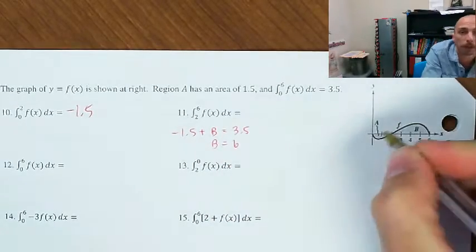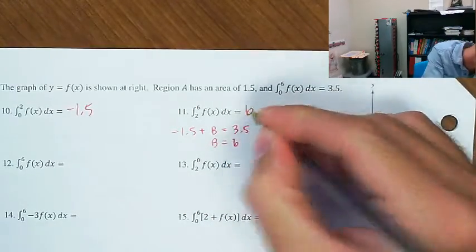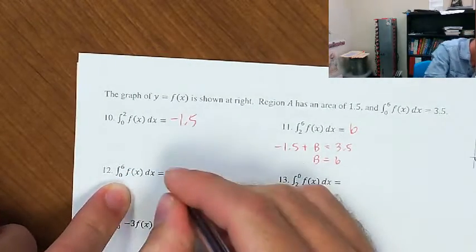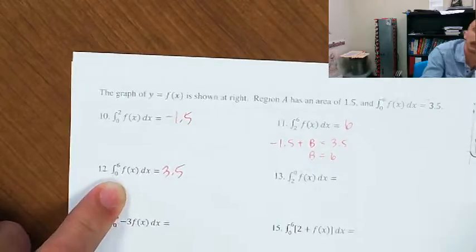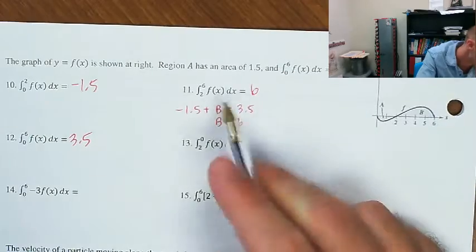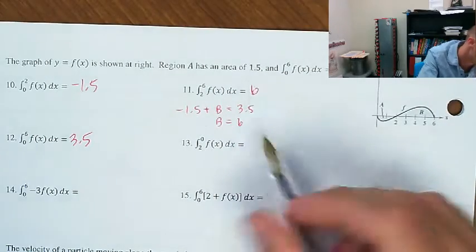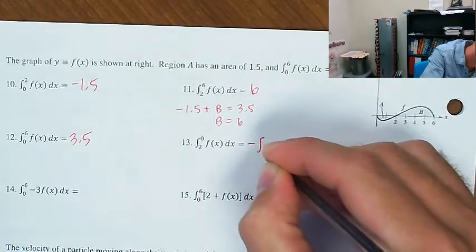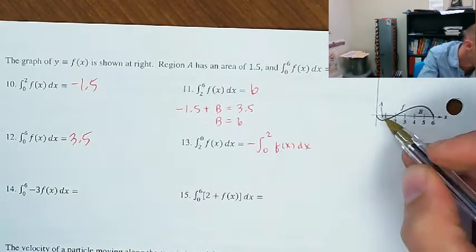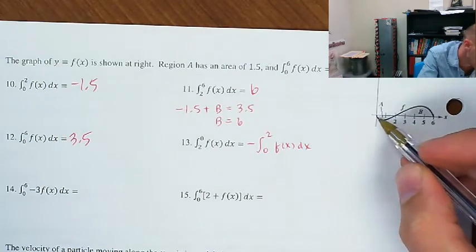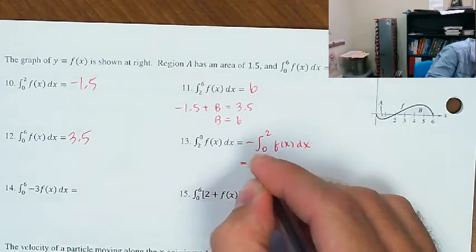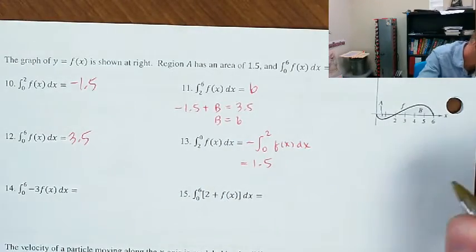Region B represents the area under the graph of f between 2 and 6, which is a positive number because we're above the x-axis, equal to 5. The integral from 2 to 0 of f(x) dx — that's the negative of the integral from 0 to 2 — so it's the negative of negative 1.5, equal to positive 1.5.